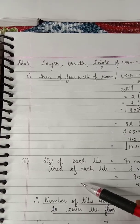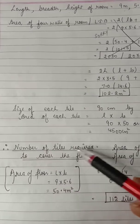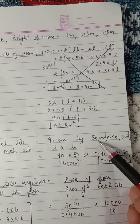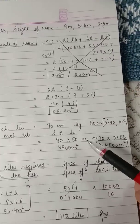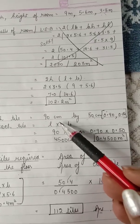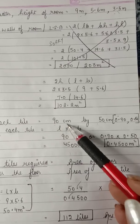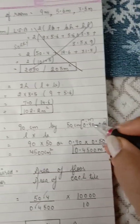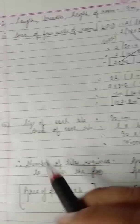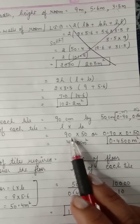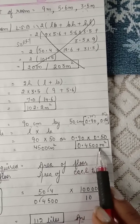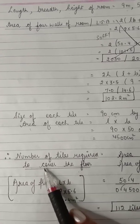Next, find the number of tiles required to cover the floor. One tile's size is 90 cm × 50 cm. Since the room dimensions are in meters and tile dimensions are in centimeters, we convert: dividing by 100 gives 0.90 m and 0.50 m. The area of one tile is 0.90 × 0.50 = 0.4500 meter square.